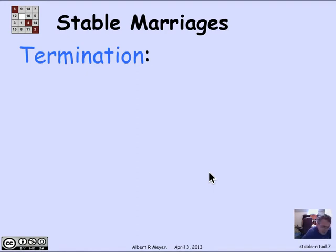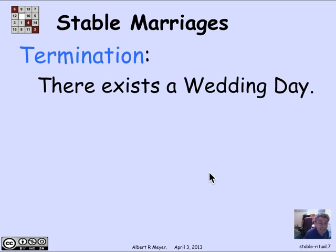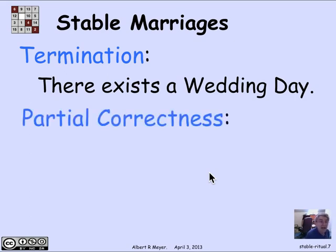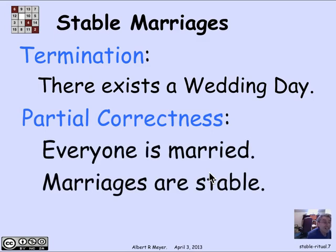If we think about this process, it's really a state machine. What the states are is the set of girls on the boys' lists on any given morning. Those states evolve to a new list after the crossing out happens on the next morning. So this is a memorable way to tell a story about the transitions of a state machine, and we can bring our state machine concepts to bear. The first thing we want to prove is that this state machine terminates — that is to say, there exists a wedding day. Then we want to prove that this state machine is partially correct: when the machine stops, everyone is married and the marriages are stable.